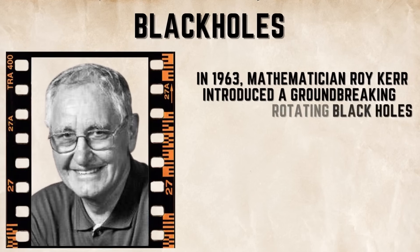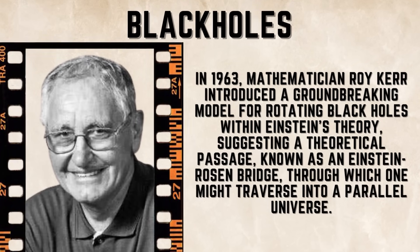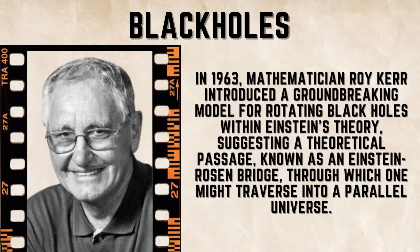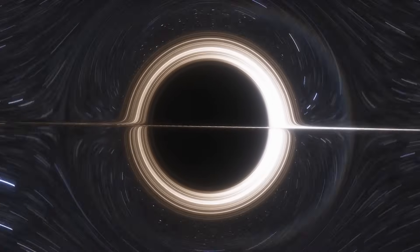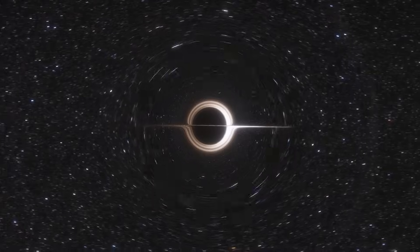In 1963, New Zealand mathematician Roy Kerr developed an audacious model for rotating black holes using Einstein's theory of general relativity. Kerr proposed that falling into a spinning black hole could transport you through a hypothetical portal called an Einstein-Rosen bridge.